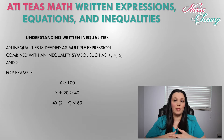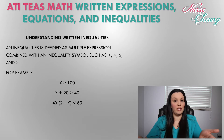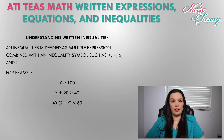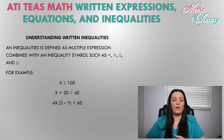Just like written equations, we can have written inequalities. An inequality is defined as multiple expressions combined with an inequality sign — such as less than, greater than, less than or equal to, or greater than or equal to — as opposed to an equal sign. Examples of this are: x is greater than or equal to 100; x plus 20 is greater than 40; or 4x times the quantity 2 minus y is less than 60.